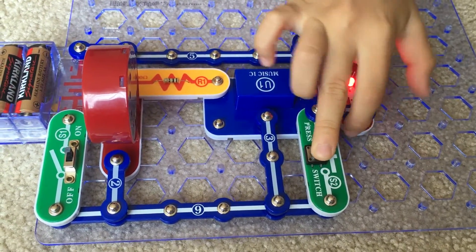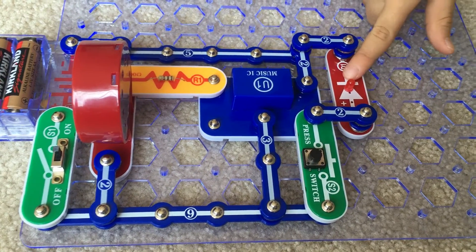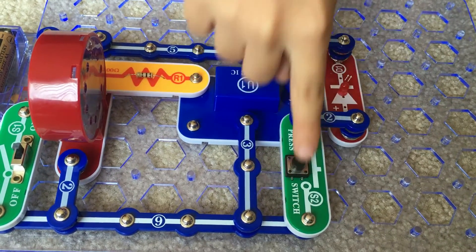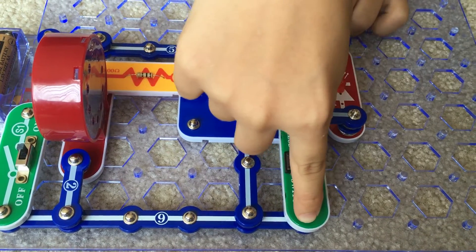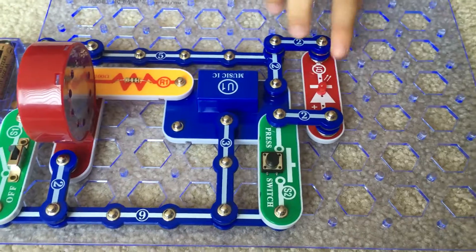And if you press this, the LED will turn on for a while, because it goes to here, here, here, and goes back to the main circuit. This is positive, and this end is negative, so it goes to here, here, here, here, here, here, and there.